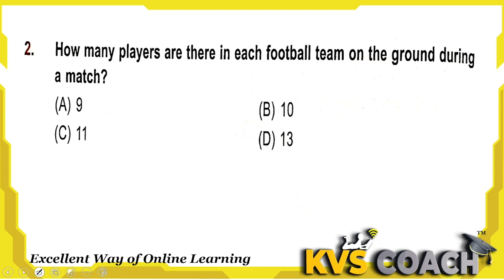Next question: how many players are there in each football team on the ground during a match? In a football team there will be 11 players. Option C is the right answer here.